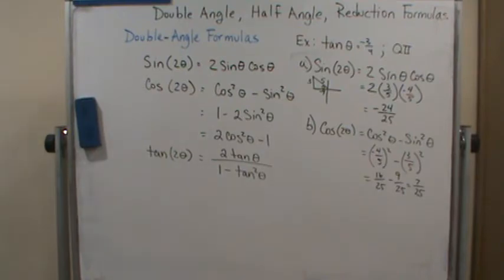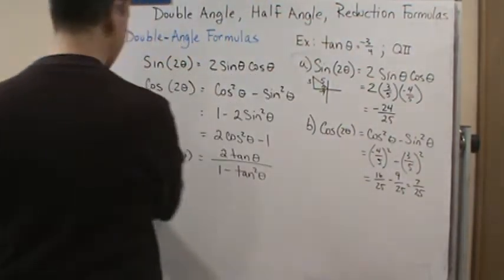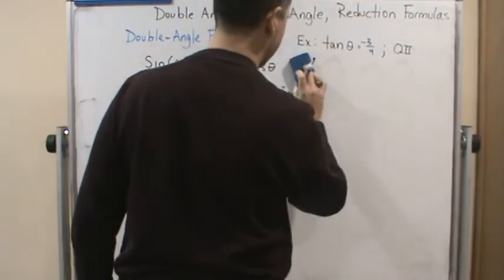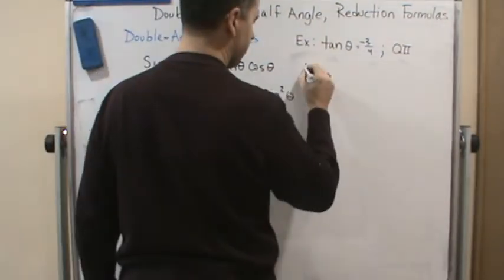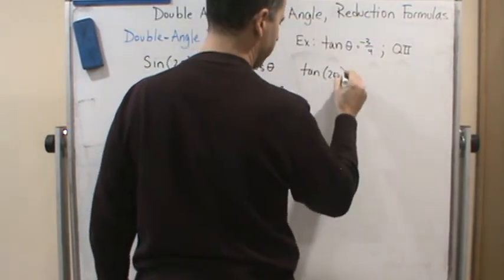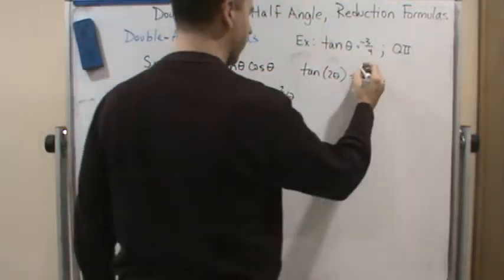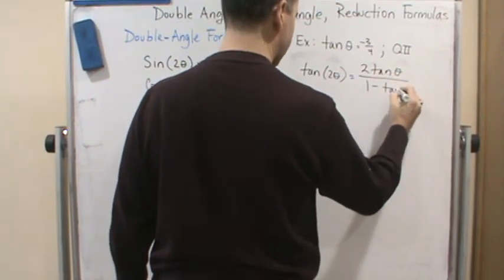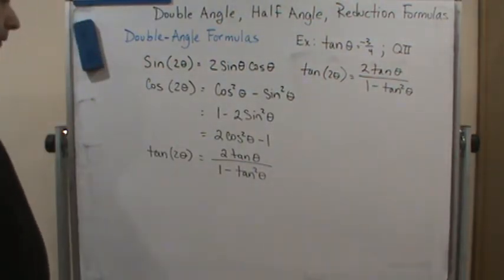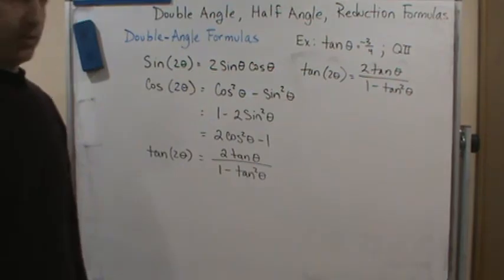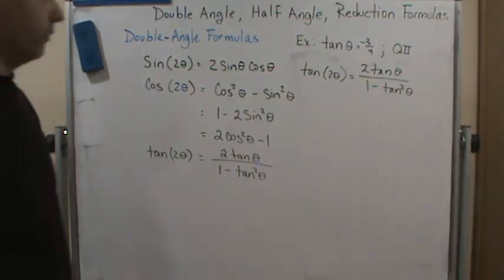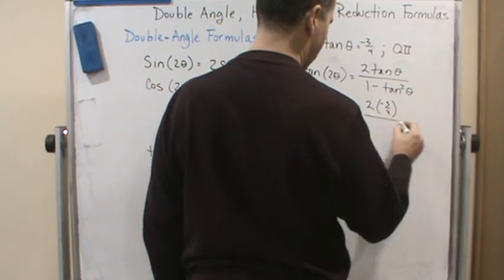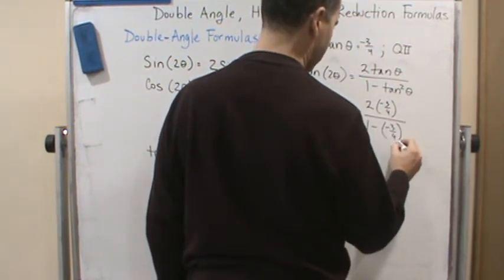Now, the last one is tangent of two-theta. Now, I'm just going to erase this here so I have more room. So now I'm going to do tangent of two-theta. And that's given down here by this formula. So that's going to be two tangent theta over one minus tangent squared theta. Now, the easy thing is we already know what tangent theta is. So this is just really just plug and chug. So now we're just going to do two times negative three-fourths over one minus negative three-fourths quantity squared.